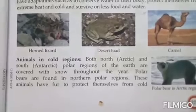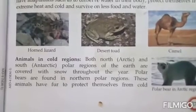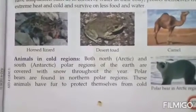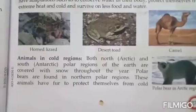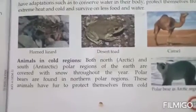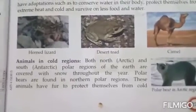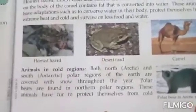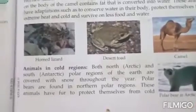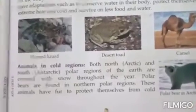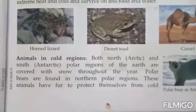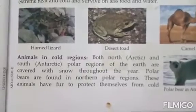Arctic and Antarctic are the polar regions of the earth, which are covered with snow throughout the year. Polar bears are found in northern polar regions, and penguins are found in southern polar regions.